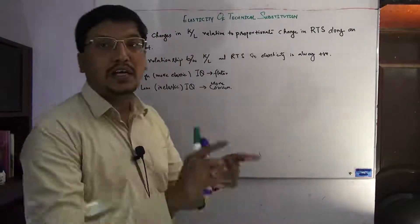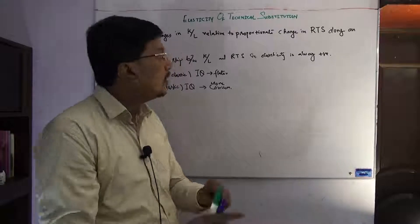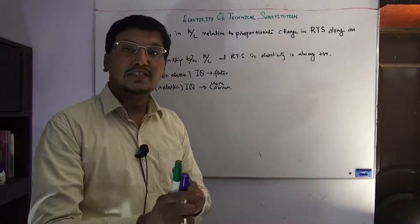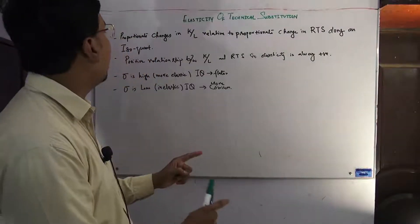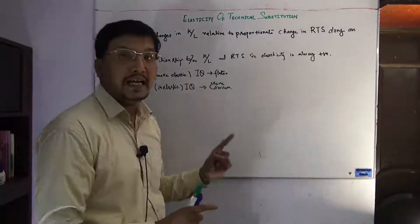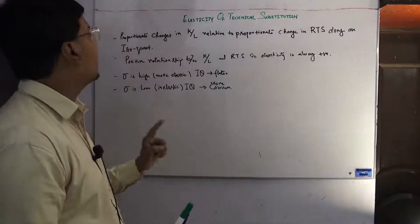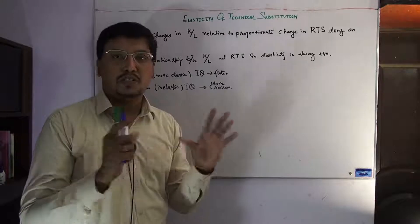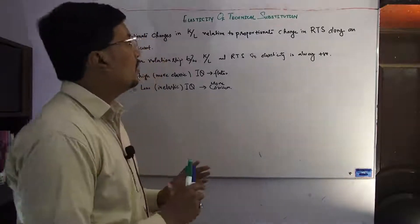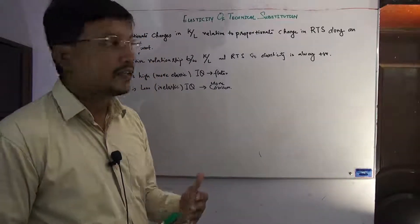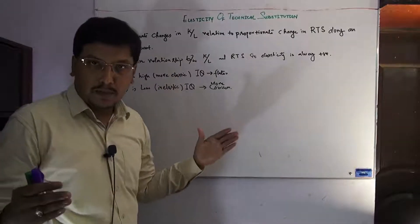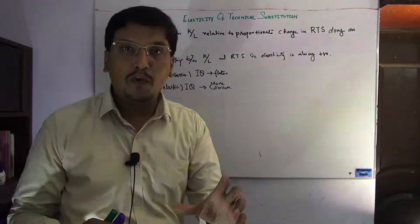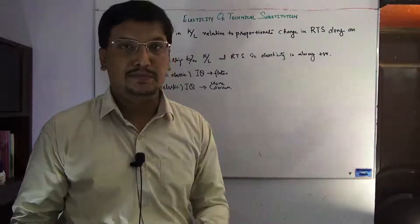If you have found a rate of technical substitution, then we ask: what kind of proportionate change exists in the capital-labor ratio? This is what elasticity of technical substitution tells us — along an isoquant, where the level of production is the same. The slope of the isoquant is called the rate of technical substitution.